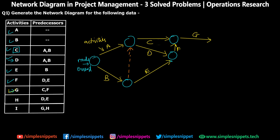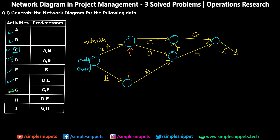H requires D and E together — D and E already meet at a node, so H can start from there, resulting in another node. For I, G and H are required. G ended at one node and H at another, so instead of separate nodes I connect them together — G to H's node or the other way, both are fine. So G and H combine at this node, and now I can happen — I is the last activity, creating our final node. So this was our first network diagram. The only unique thing here was the dummy activity; the rest we already covered in the previous video.